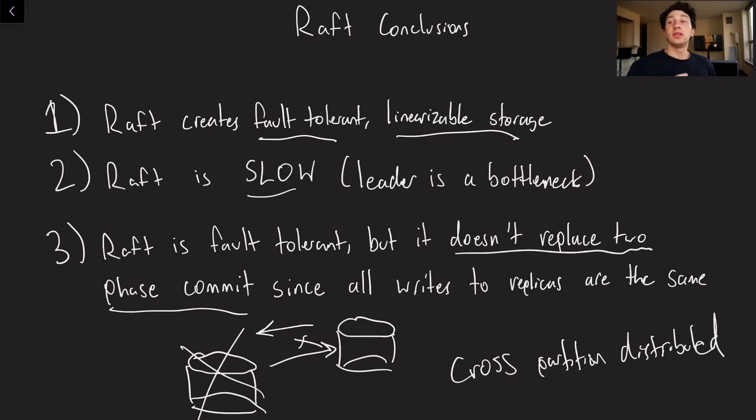But the point is, oftentimes, if you need to make two different writes to two different partitions, you would have to use something like two-phase commit. Now again, you could use two-phase commit combined with Raft if you wanted to use Raft to basically deal with your replication, to be strongly consistent there. But even still, you are eventually just going to have to deal with two-phase commit at some point. So yeah, that is pretty much all for this video, guys.